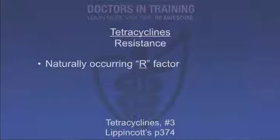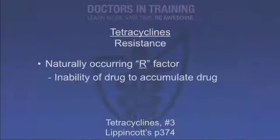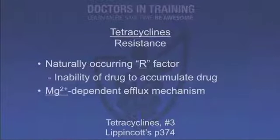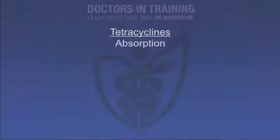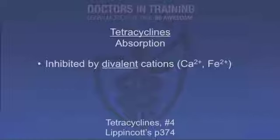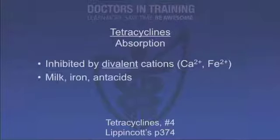There's quite a bit of resistance with tetracyclines, limiting their use. There is a naturally occurring R factor — an inability of the organism to accumulate the drug. There's a magnesium-dependent efflux system that kicks the drug out of the bacteria. Absorption is mostly oral, but can be inhibited by divalent cations — milk, milk products, iron, and antacids can all inhibit absorption of tetracyclines.